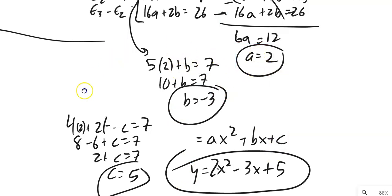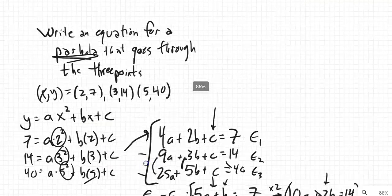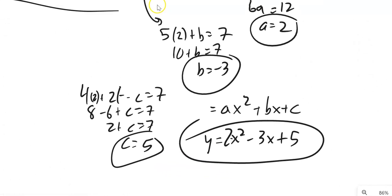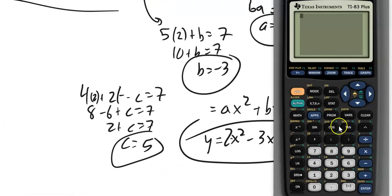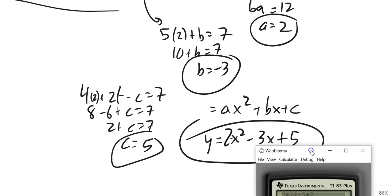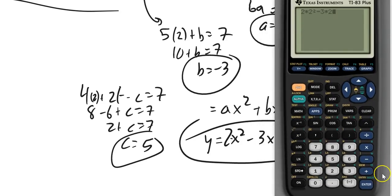I can take some of these values. Like, let's say, looking at my original points, 2, 7 is supposed to be one of my points. So, if I go 2 times 2 squared minus 3 times 2, right, I'm just letting x be 2, plus 5. It should spit out 7. Yes, and I can check my other 3 points if I wanted as well.